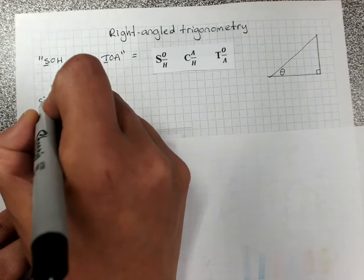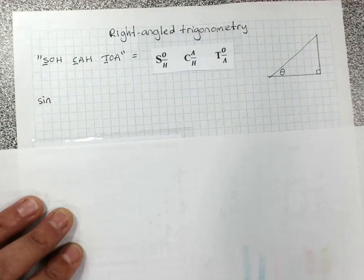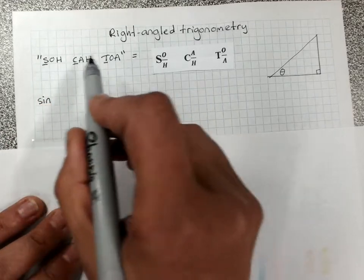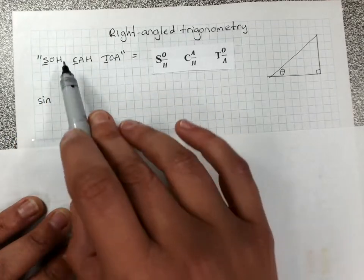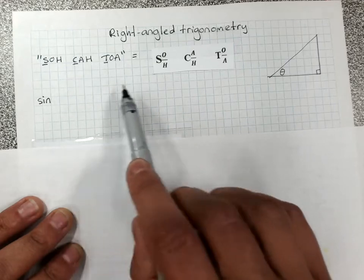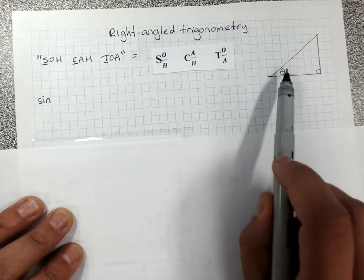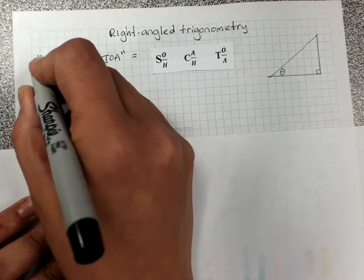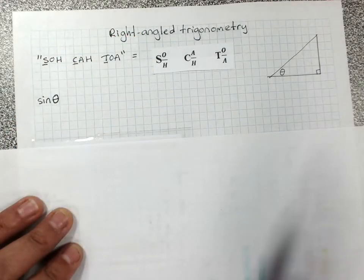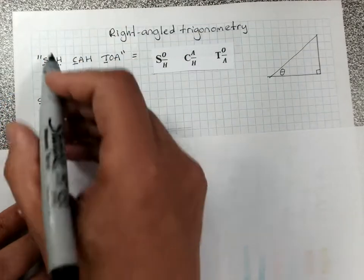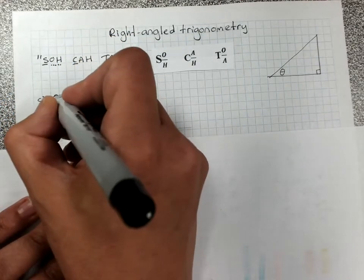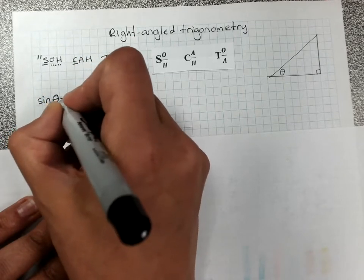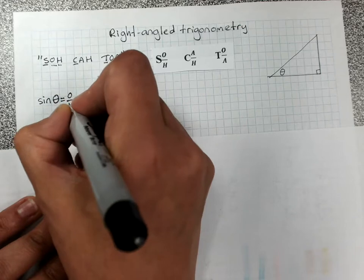So, sine for this first one, SOH. The one thing that isn't given to you in SOH CAH TOA that you're going to need to remember is that you have to put in theta, the angle, after the sine or the cos or the tan. And then, the O and the H after the S, says sine theta, and we've got to have our equals, and then it's the O over the H.